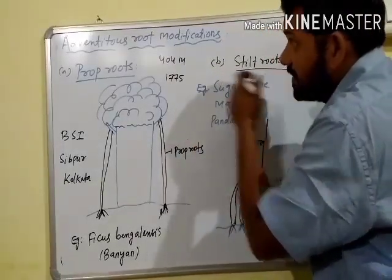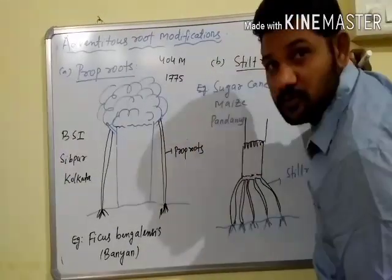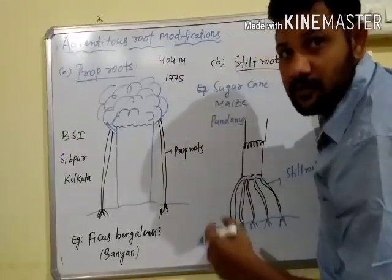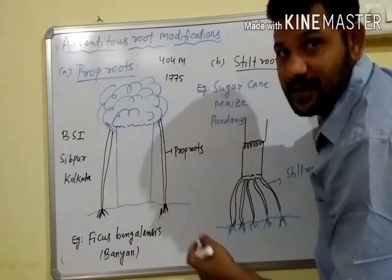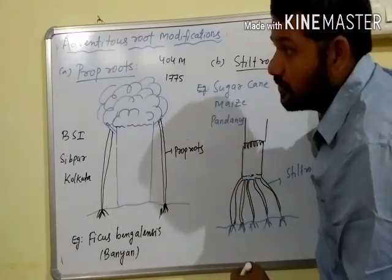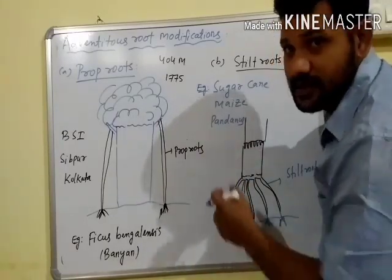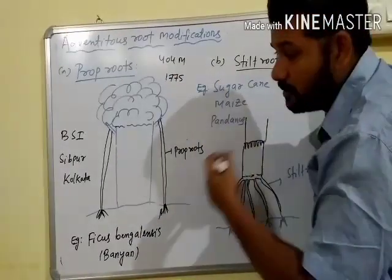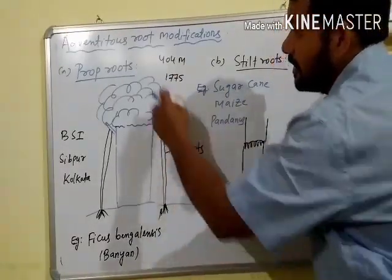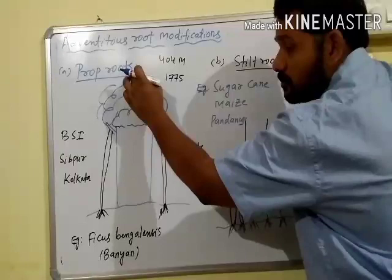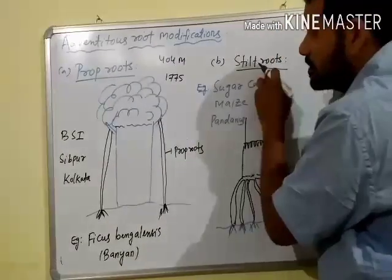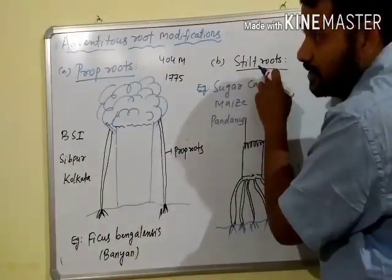Adventitious Root Modifications are next. In Adventitious Root modifications, roots develop from any part of the plant other than the radicle. They may be underground or aerial. These roots also modify to perform various new functions. Two important Adventitious Root modifications are Prop Roots and Stilt Roots.